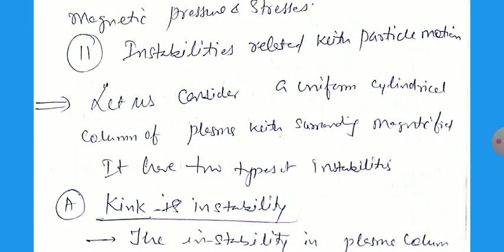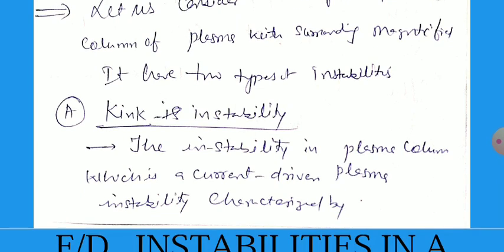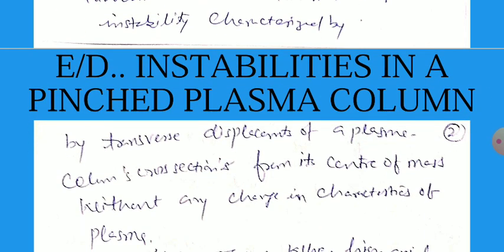This instability in the plasma column is a current driven plasma instability which is characterized by the transverse displacement of a plasma column cross section from its center of mass without any change in the characteristics of the plasma. What is kink instabilities?